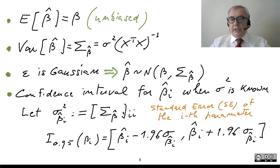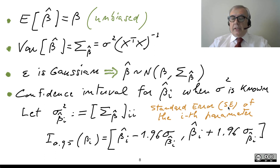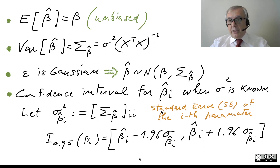Therefore, on the main diagonal of sigma-beta-hat, we find all the variances of the single parameters beta-i. This is the variance of the i-th parameter beta-hat-i, and as such it is also the squared standard error of the i-th parameter. We use the terminology standard error to denote the standard deviation of an estimated parameter.